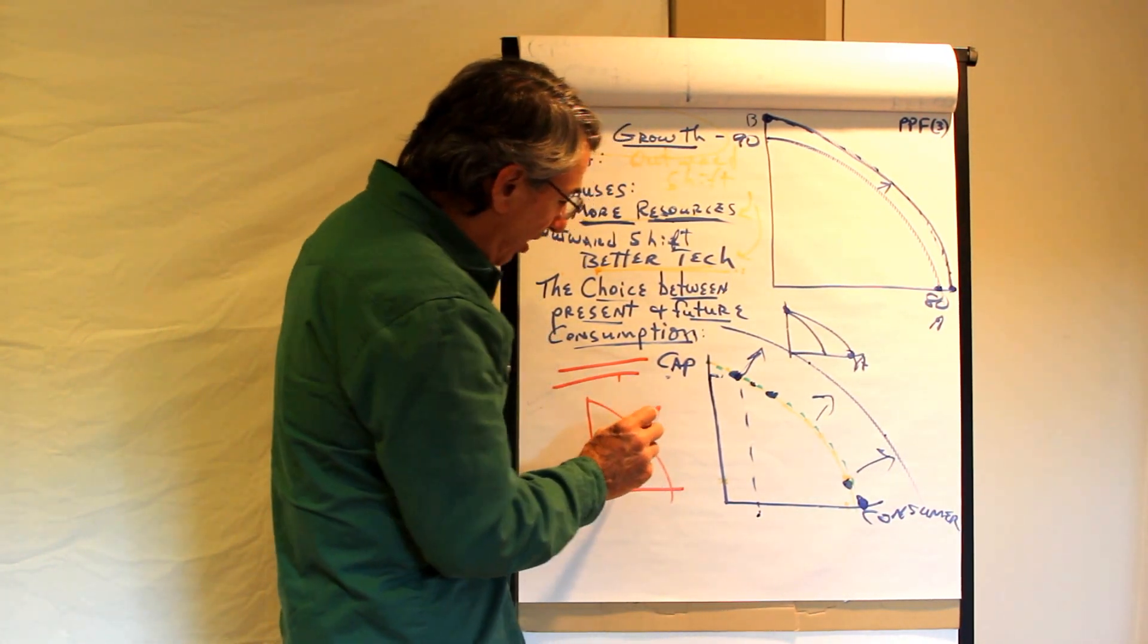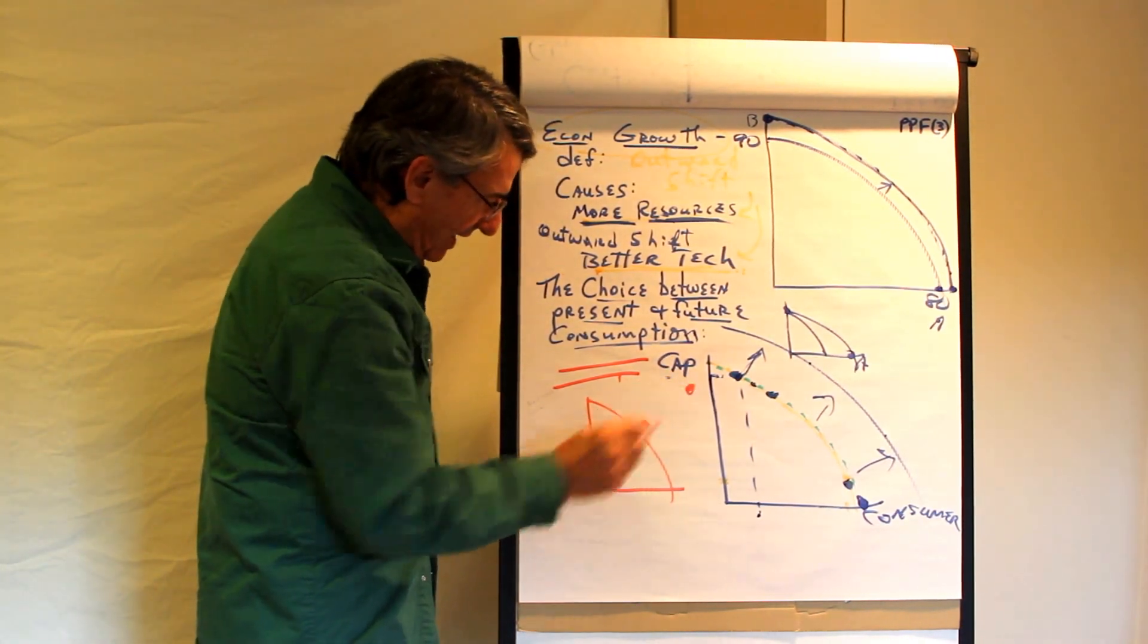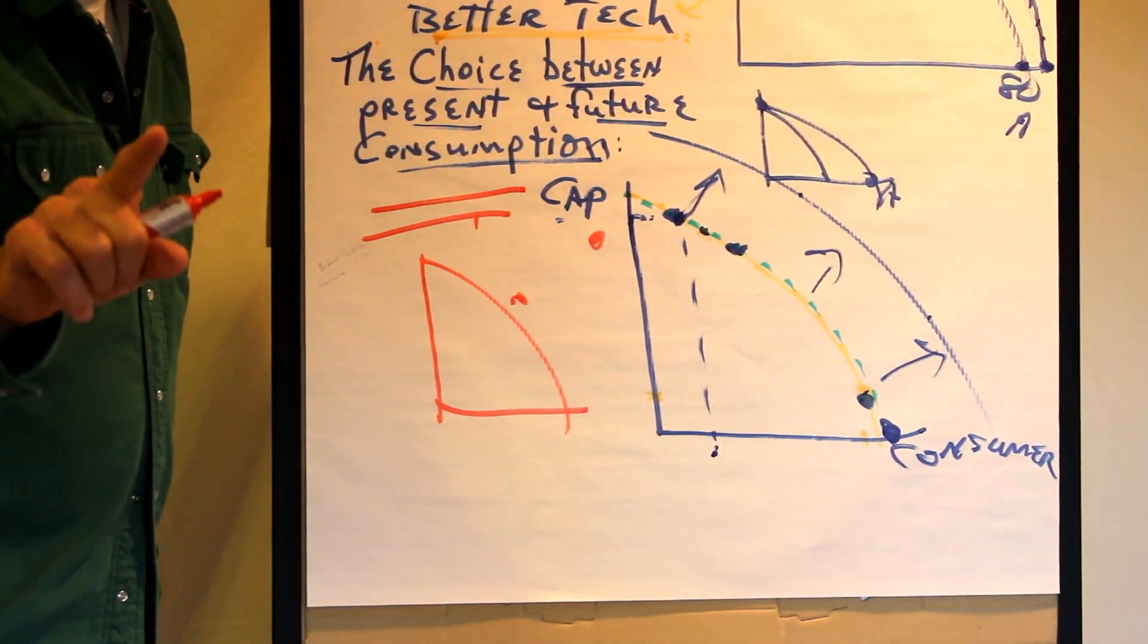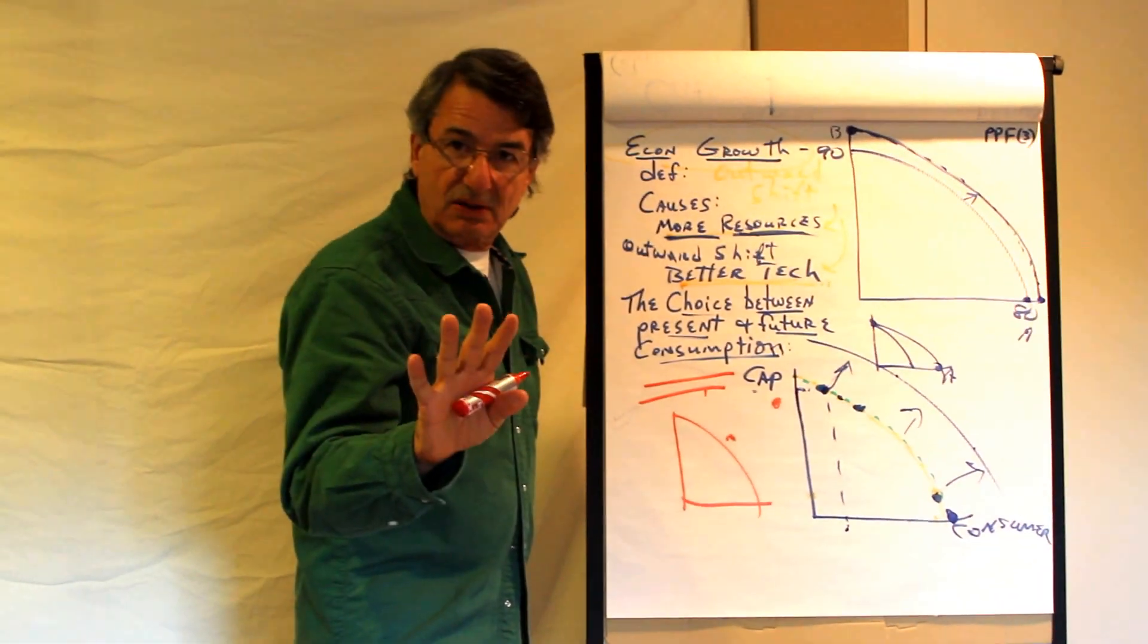But we all live outside of our production possibilities frontier. In fact, we live out here someplace. But we do it because we specialize and trade with other people. So that's the lesson on comparative advantage specialization and trade.